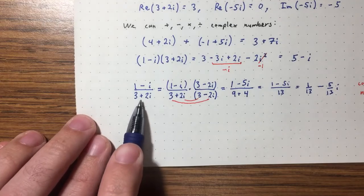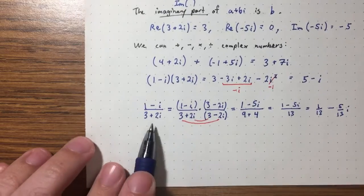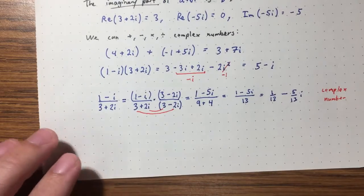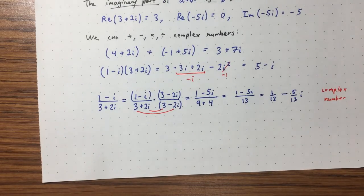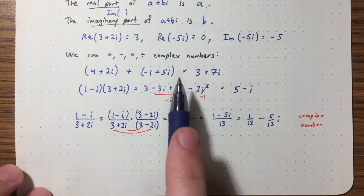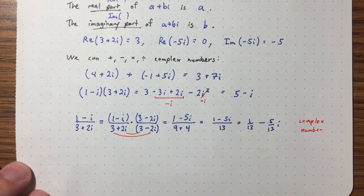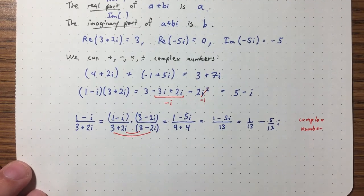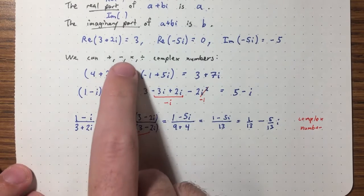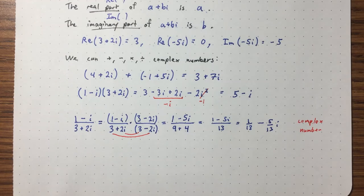If you divide two complex numbers you always get a complex number. Complex numbers form a field — a mathematical structure where addition, subtraction, multiplication, and division (by nonzero numbers) all work in the usual way.